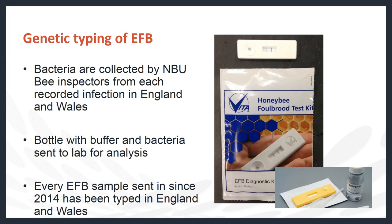In the UK, NBU inspectors take a sample of every EFB case they find in England and Wales. They collect a diseased larva, homogenise it in a stabilisation buffer, and run a small aliquot of this liquid through a lateral flow device — a small device which uses antibodies to detect the bacteria and confirm that it is present. Once they have verified the condition, the buffer bottle and the lateral flow device are sent to the NBU laboratory, where the bacteria will be analysed and the laboratory worker will identify the strain type of the EFB. This process has been performed for all cases of EFB in England and Wales since 2014.